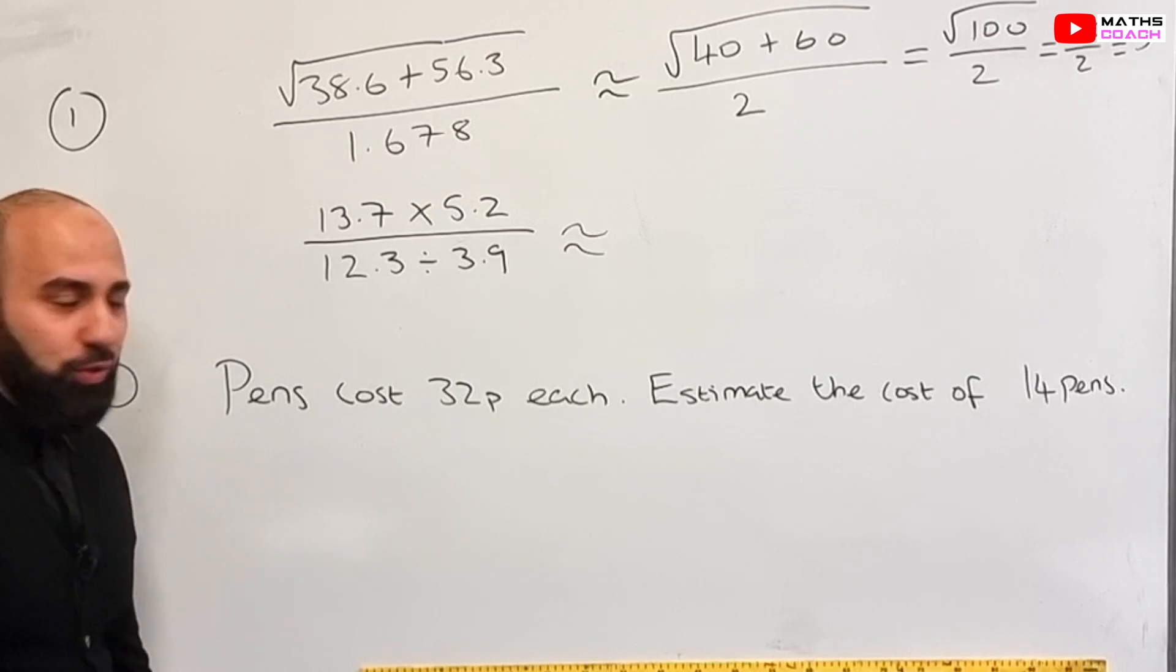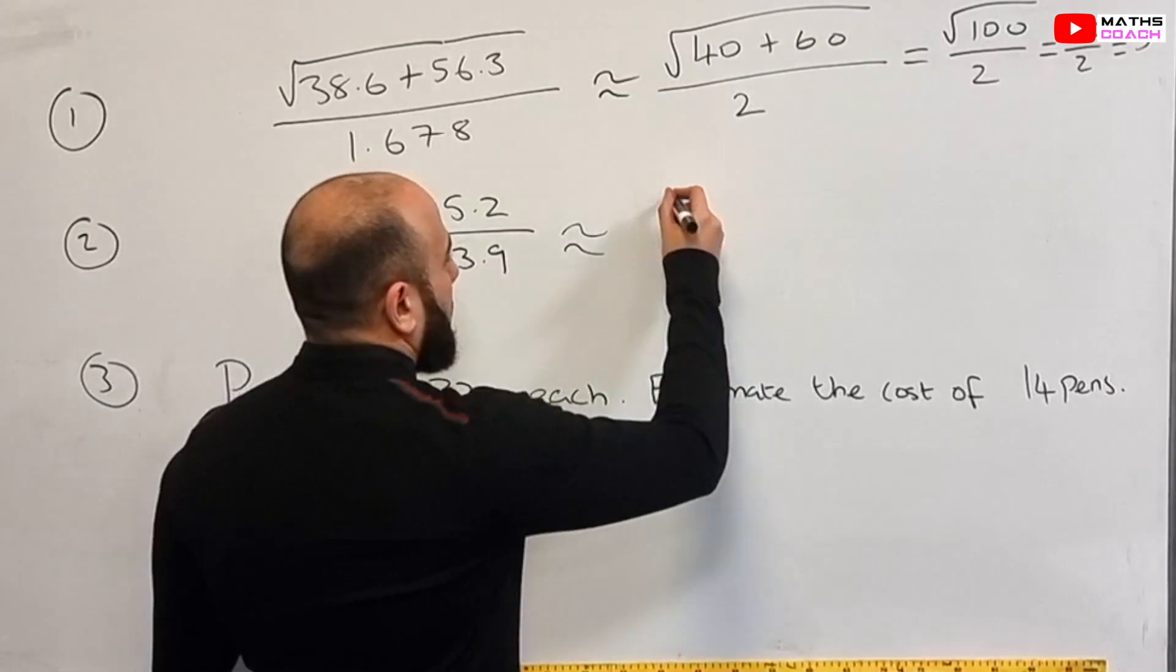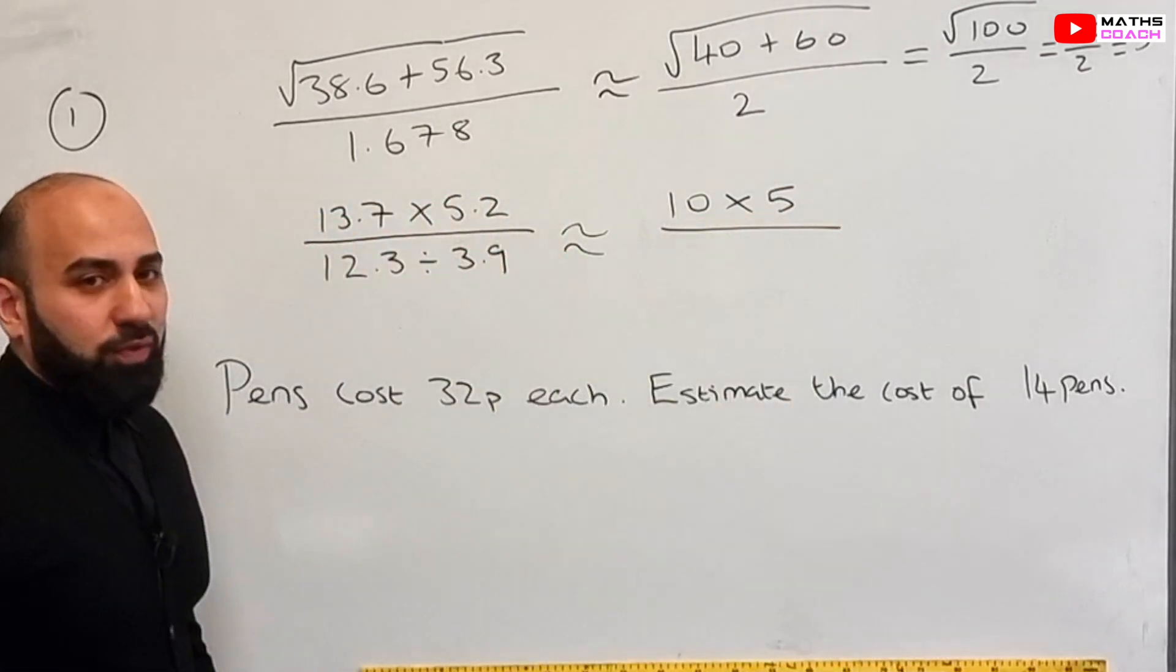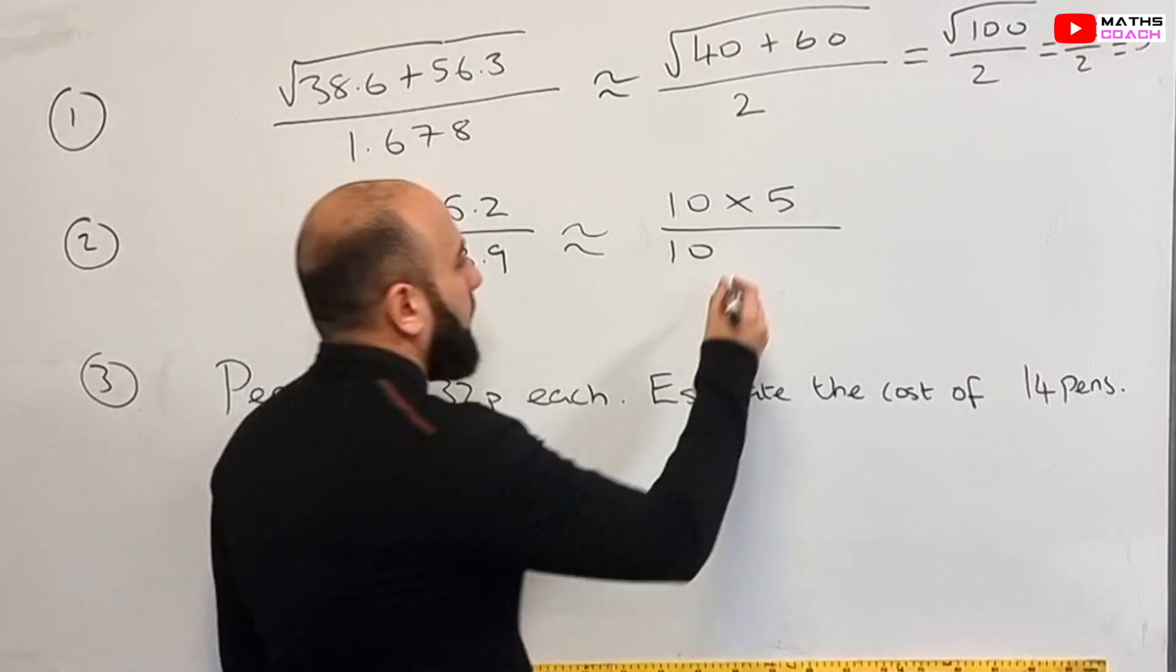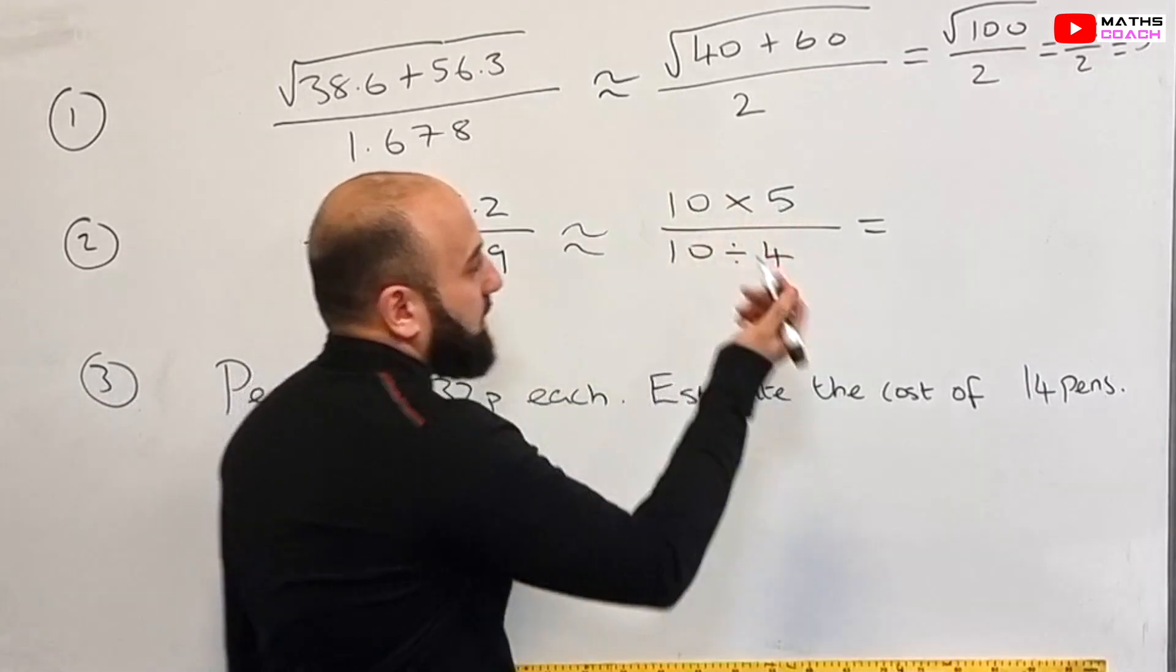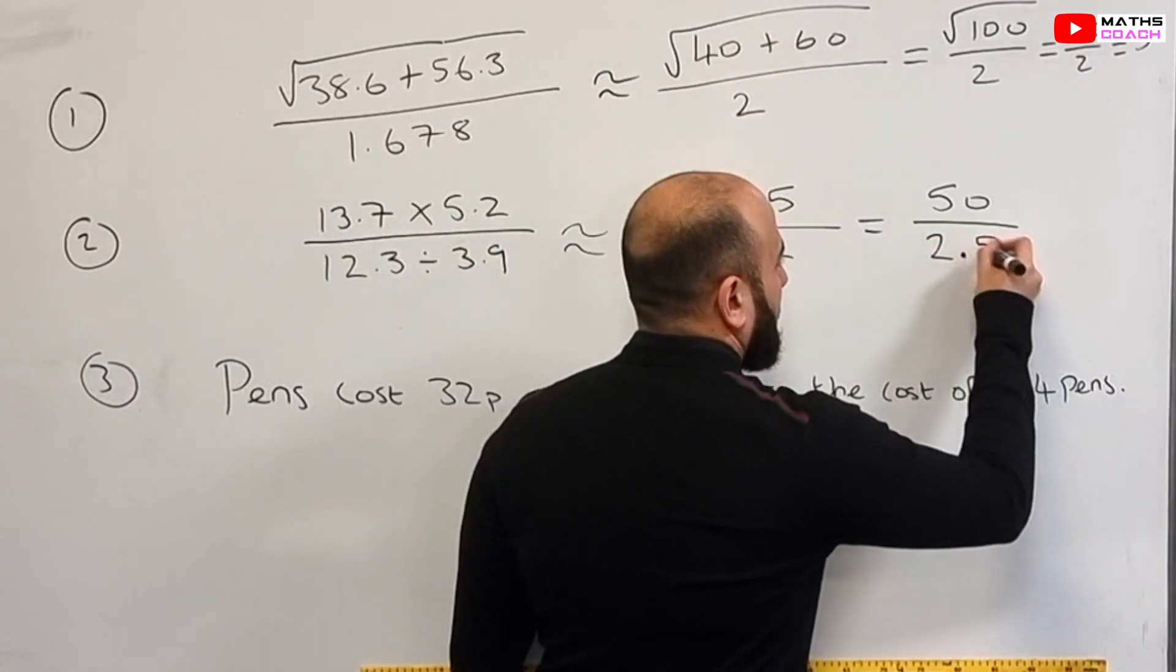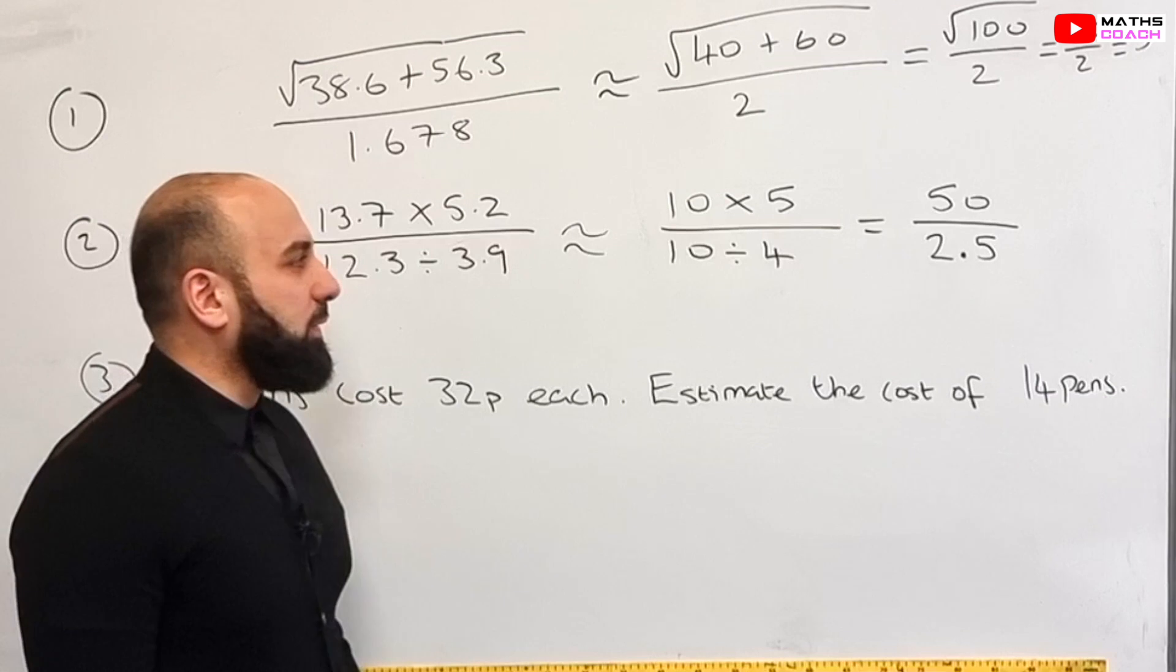Let's have a look at question two now. So we're going to round each of these numbers again to one SF. So 13.7 to one SF is 10 times by 5.2 to one SF, which is 5 divided by 12.3 to one SF, which is 10 divided by 3.9 to one SF, which is 4. So now we can work out what's on the numerator. 10 times 5, which is 50. 10 divided by 4 is 2.5. So now we need to work out what 50 divided by 2.5 is. How can we do that?